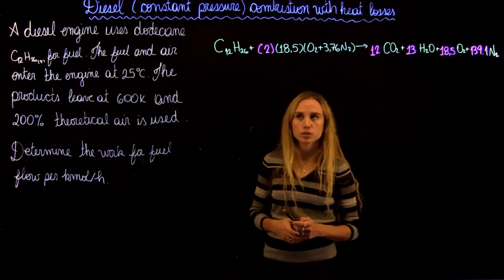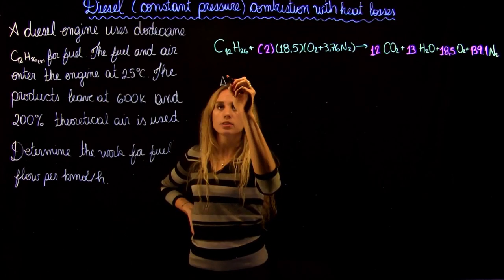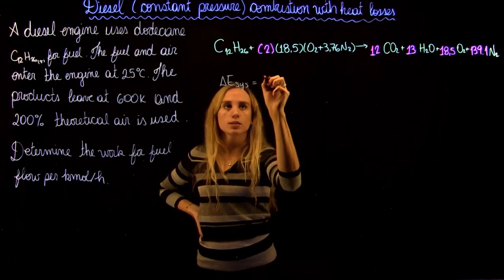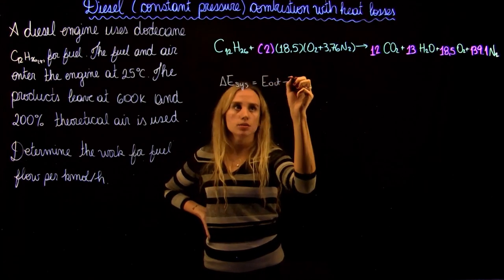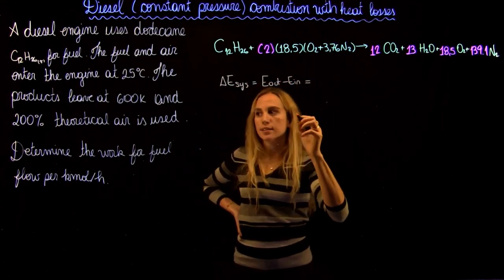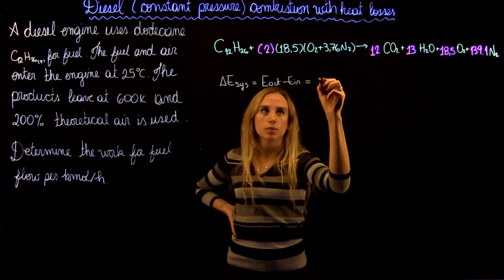So now we can write the energy balance. We know that the change in energy of a system is going to equal the energy out minus the energy in. And in this case, because it's steady flow, we know it's going to equal zero.